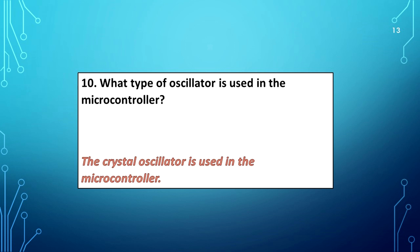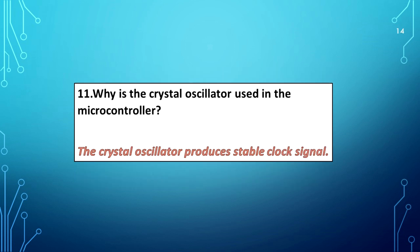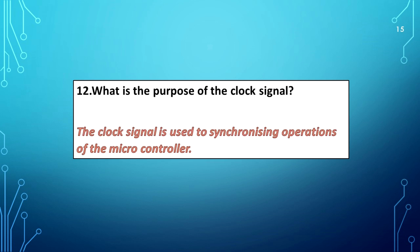What type of oscillator is used in the microcontroller? The crystal oscillator is used in the microcontroller. Why is the crystal oscillator used? The crystal oscillator produces a stable clock signal. What is the purpose of the clock signal? The clock signal is used to synchronize the operations of the microcontroller.